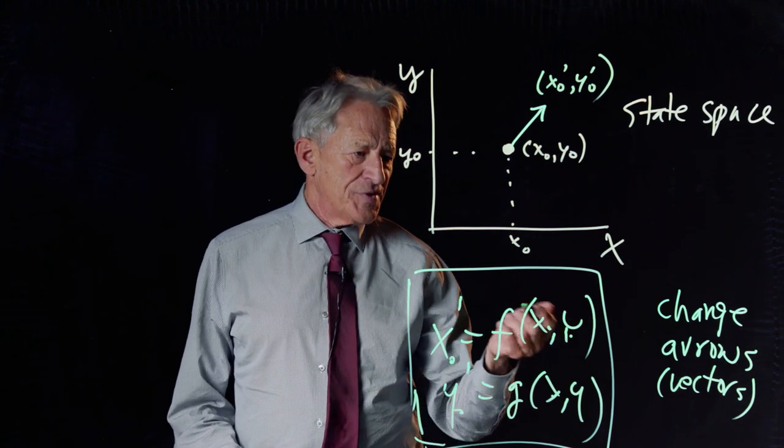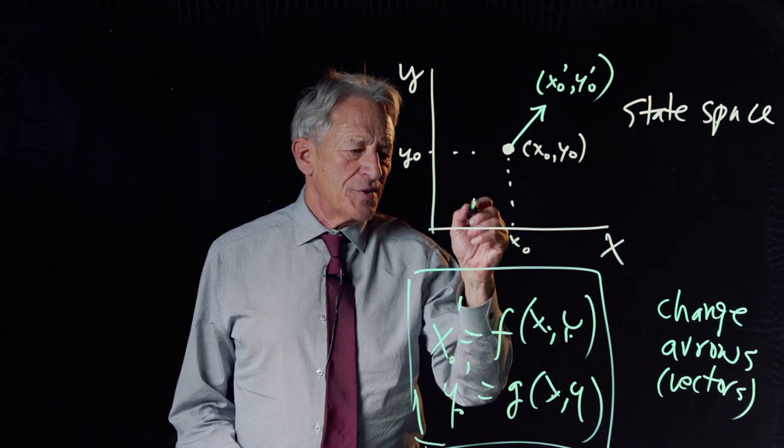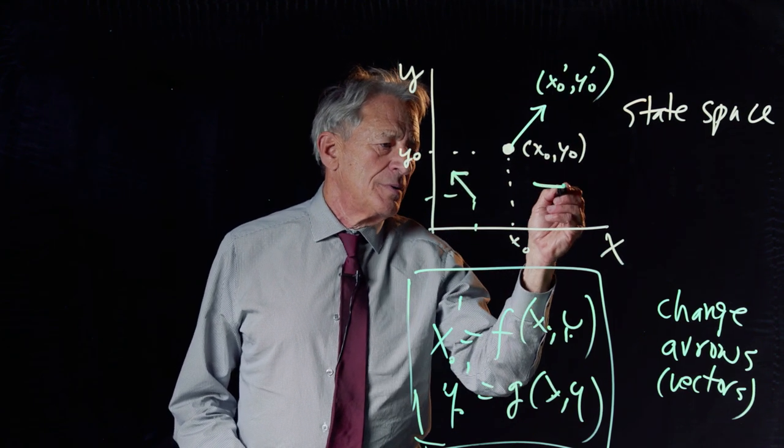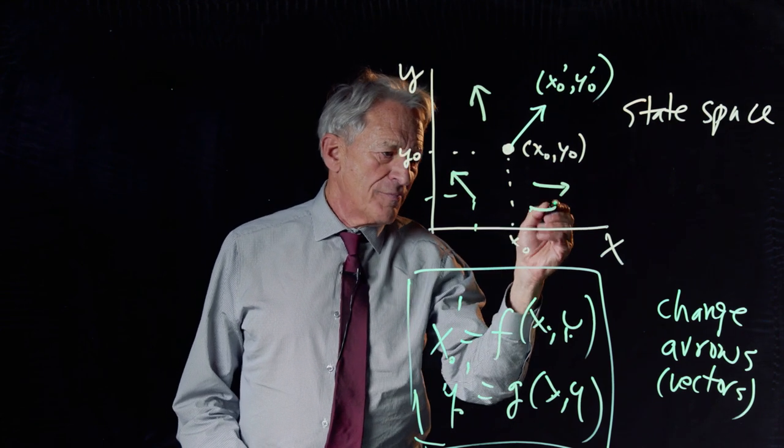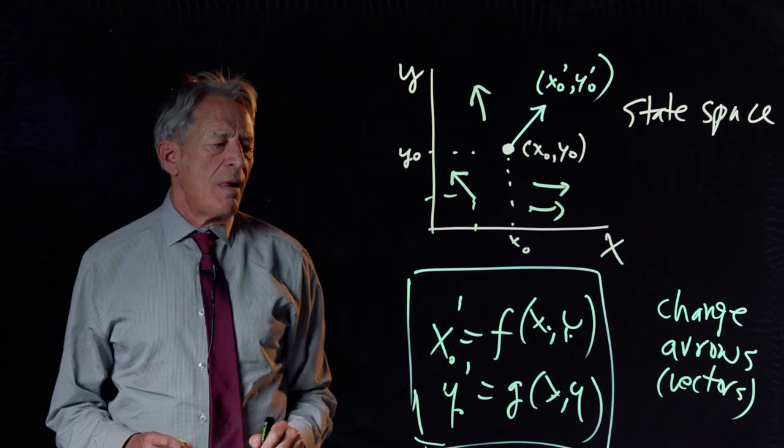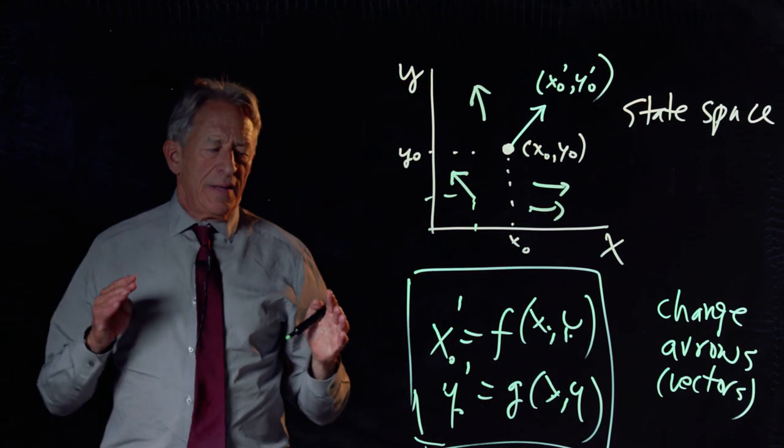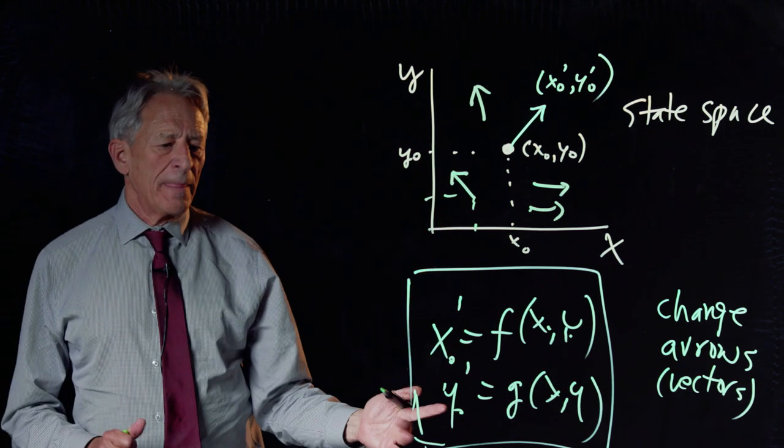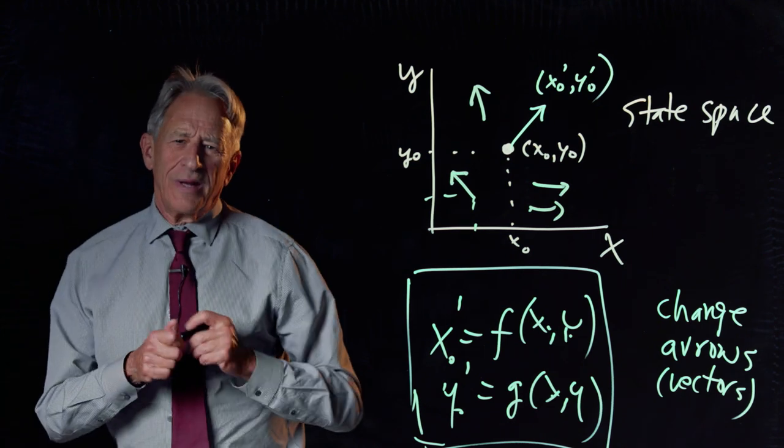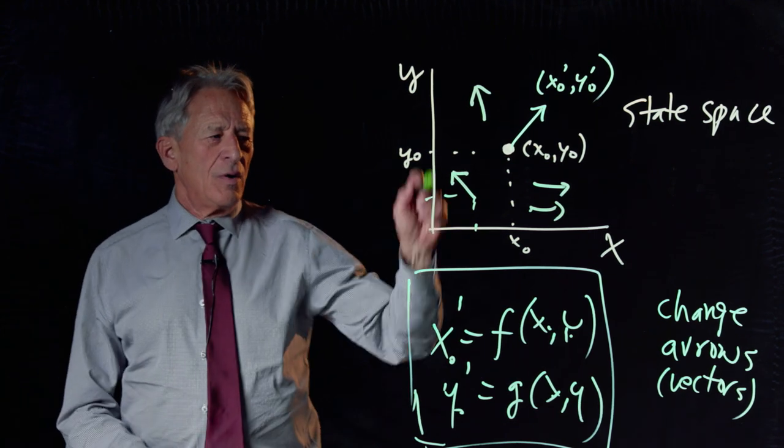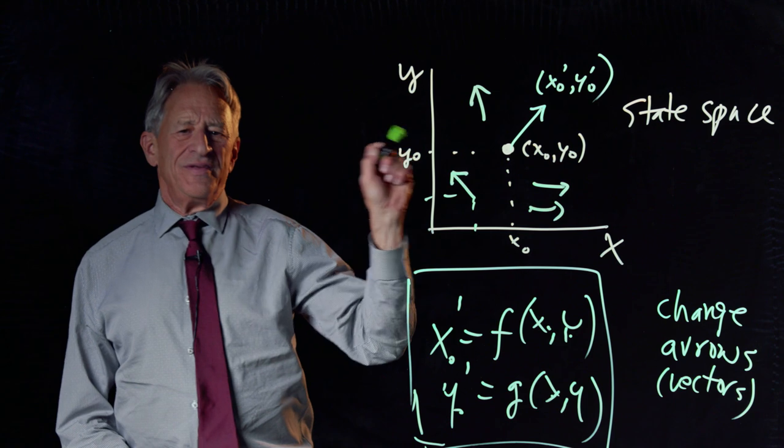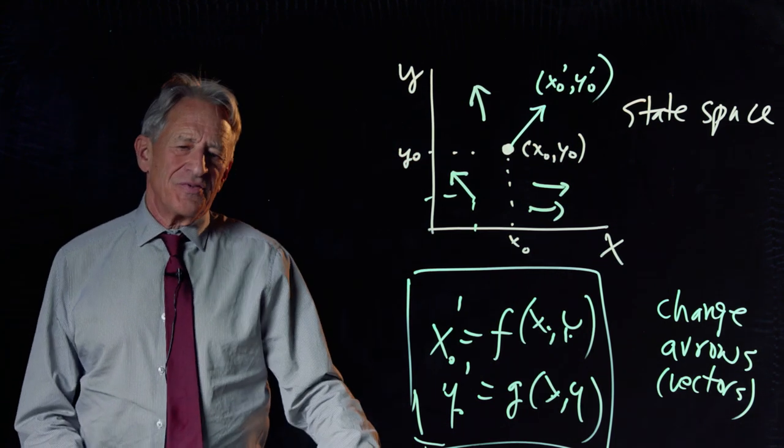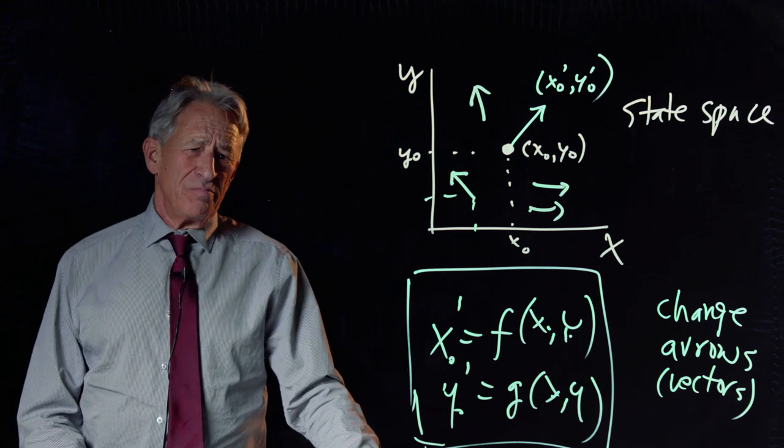And of course, this differential equation gives us a change vector at every point, going however it's going to go. So, and now the question is, this is what we've done so far, now we want to go forward and we want to ask the question, how do we obey these change vectors? How does the system change, given that these are the change vectors at every point?